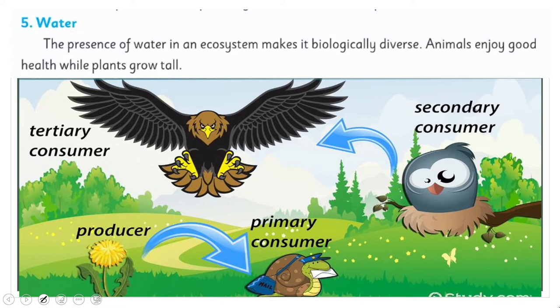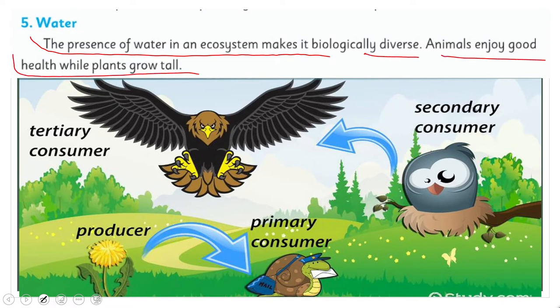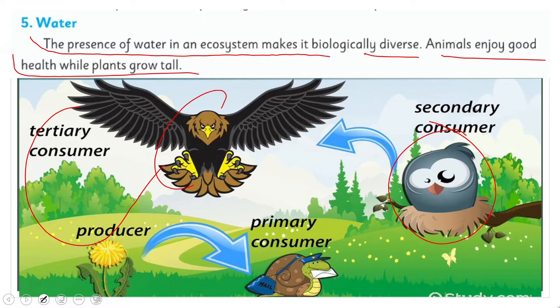The fifth one is water. Water is the basic necessity of life. My dear students, the presence of water in an ecosystem makes it biologically diverse. Animals enjoy good health while plants grow taller. Water is the most important for all of these living things.